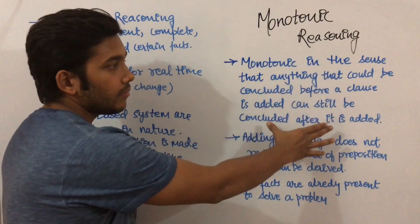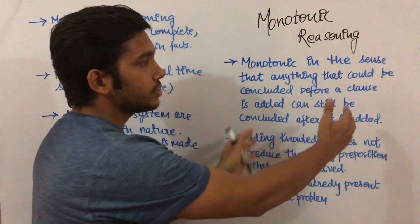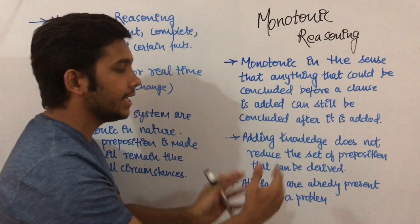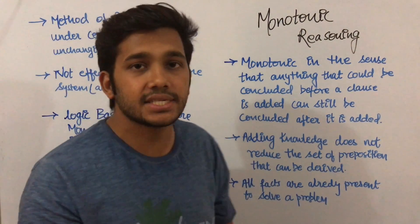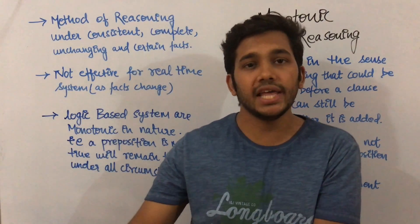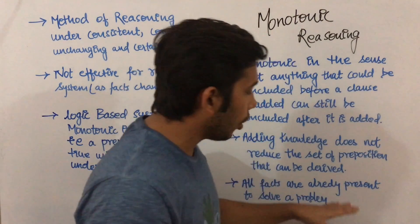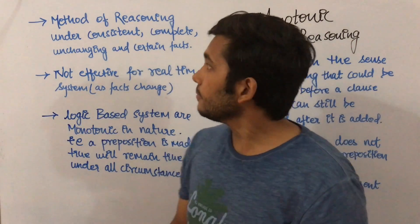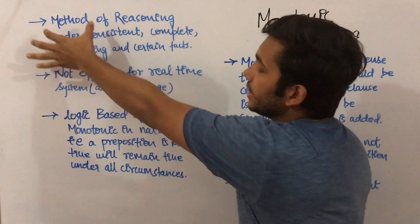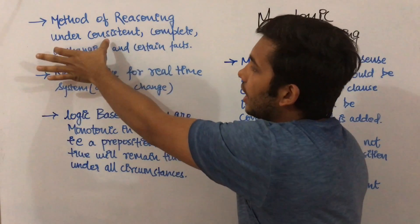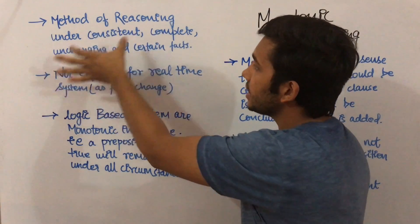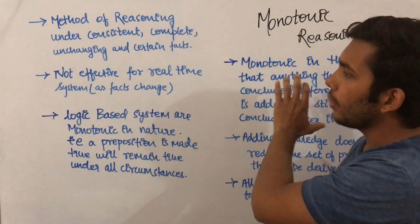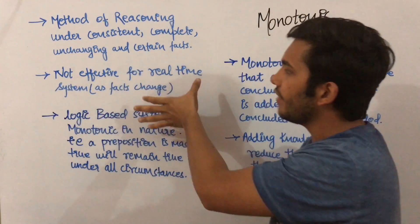Our statement was Tarun Kumar got placed in Kent Aro. From this we can derive that he got placed, and giving a second statement that he got placed with the help of his friend Anushka will not change that fact. So monotonic reasoning is a method of reasoning under consistent, complete, unchanging, and certain facts.